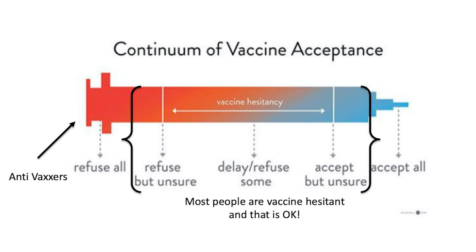As public health professionals, we do not expect the public to automatically trust interventions recommended without explanation and education. It's important to differentiate between anti-vaxxers — a population generally hard to engage in conversation around vaccines — in comparison to those who are vaccine hesitant, where there's usually room for education, discussion, and impacting their vaccination behaviors. Therefore, from a public health perspective, investing resources in combating vaccine hesitancy is what we choose to do, especially in light of COVID-19.